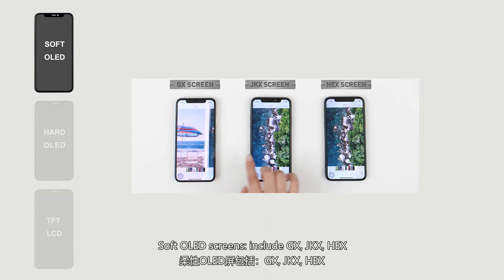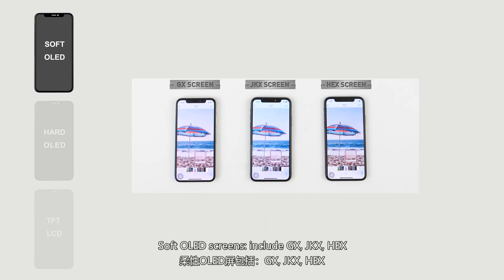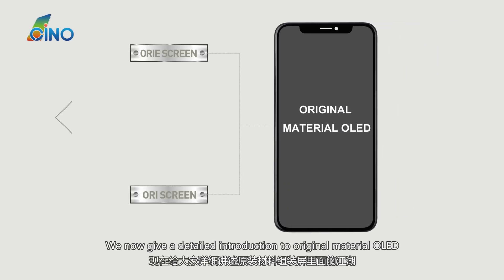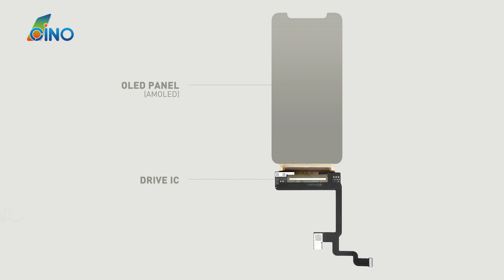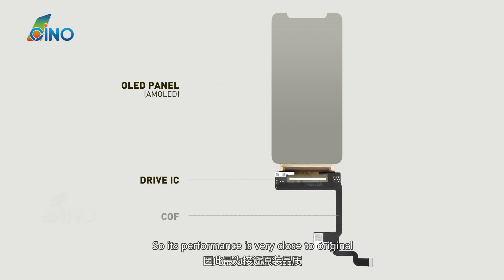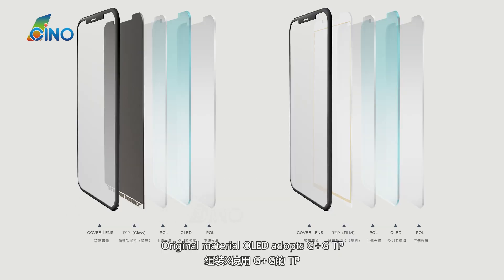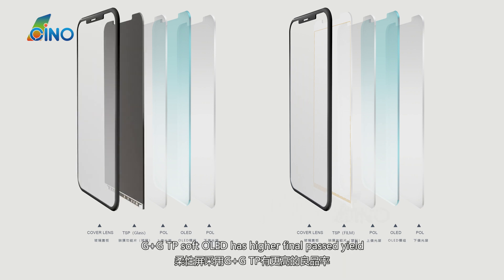Soft OLED screens include GX, JKX, and HEX. We now give a detailed introduction to original material OLED. Original material OLED adopts Samsung original OLED AMOLED and IC, the same as original, so its performance is very close to original. It employs premium COF. Original material OLED adopts G plus GTP; G plus GTP soft OLED has higher final pass yield.